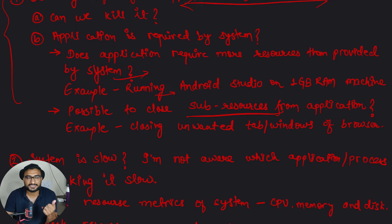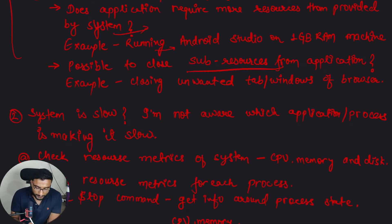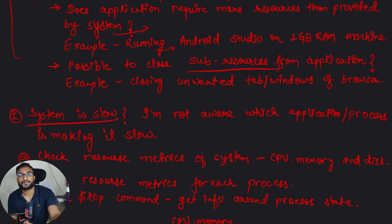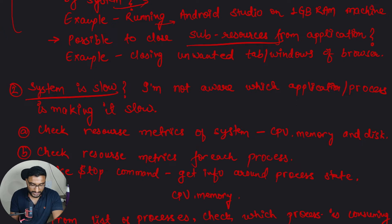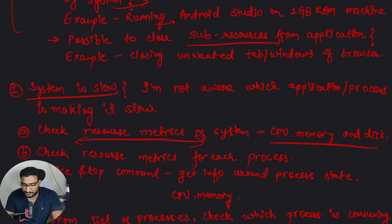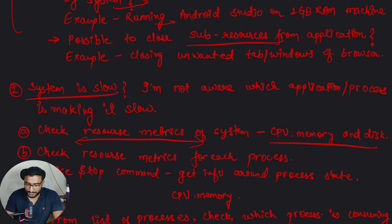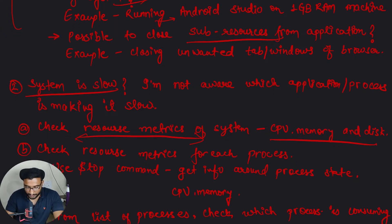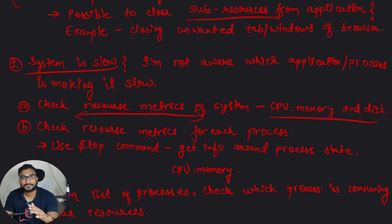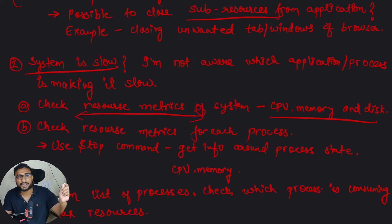If you are not able to figure out which specific application is making the system slow, there are general steps to take. The first thing is to check the resource metrics. When we say resource metrics, we mean CPU, memory, and disk — including heap memory. You can use commands on your machine or check metrics published on CloudWatch or another monitoring tool.